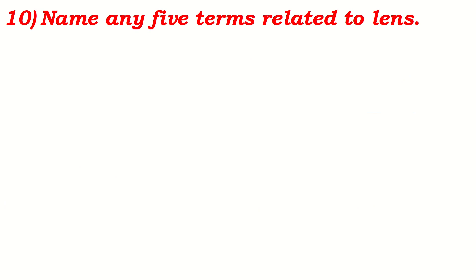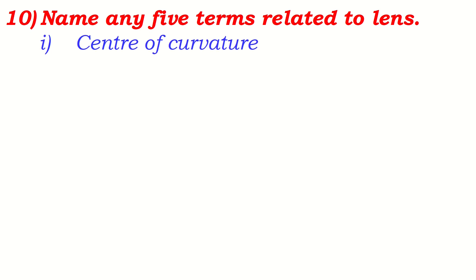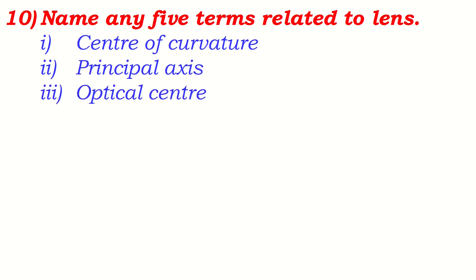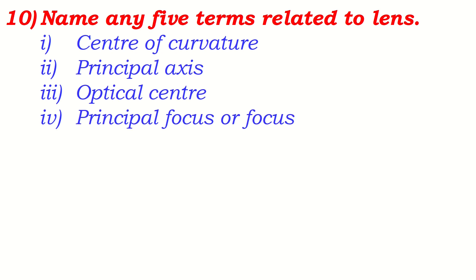Name any five terms related to lens. This is a very important part. Different terms related to the lens are very necessary because numerical problems also depend upon these parts and diagrams are drawn with the help of these points. The five terms are: number one, center of curvature; number two, principal axis; number three, optical center; number four, principal focus; and number five, focal length. Without understanding these terms, we cannot study the lens clearly.